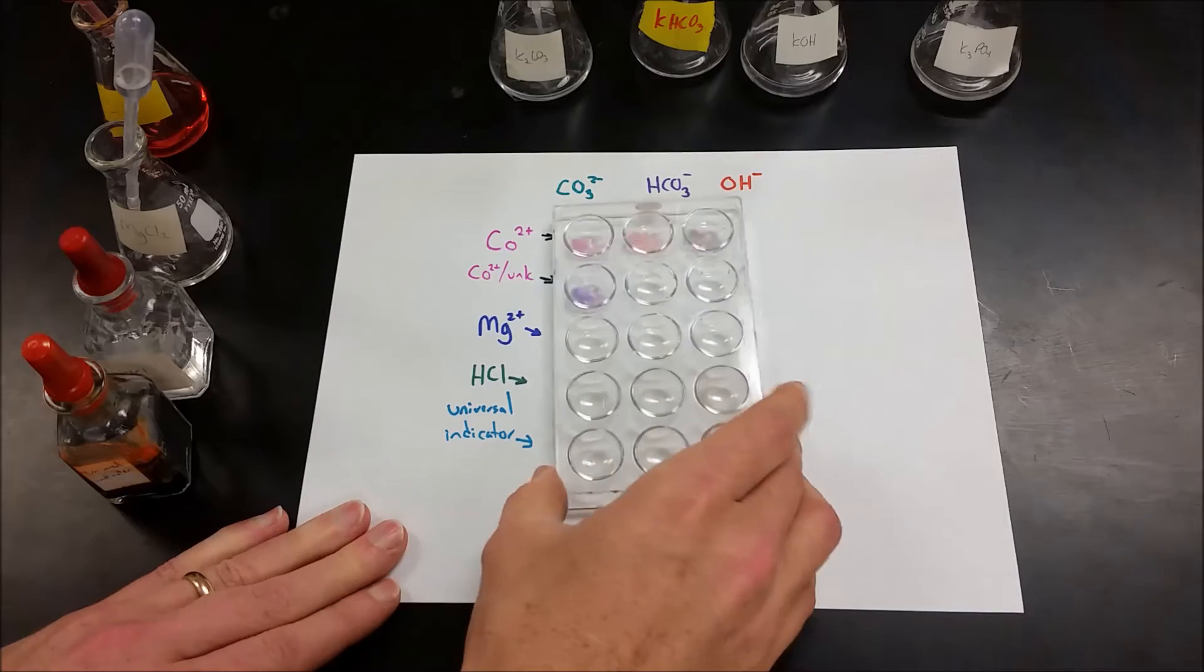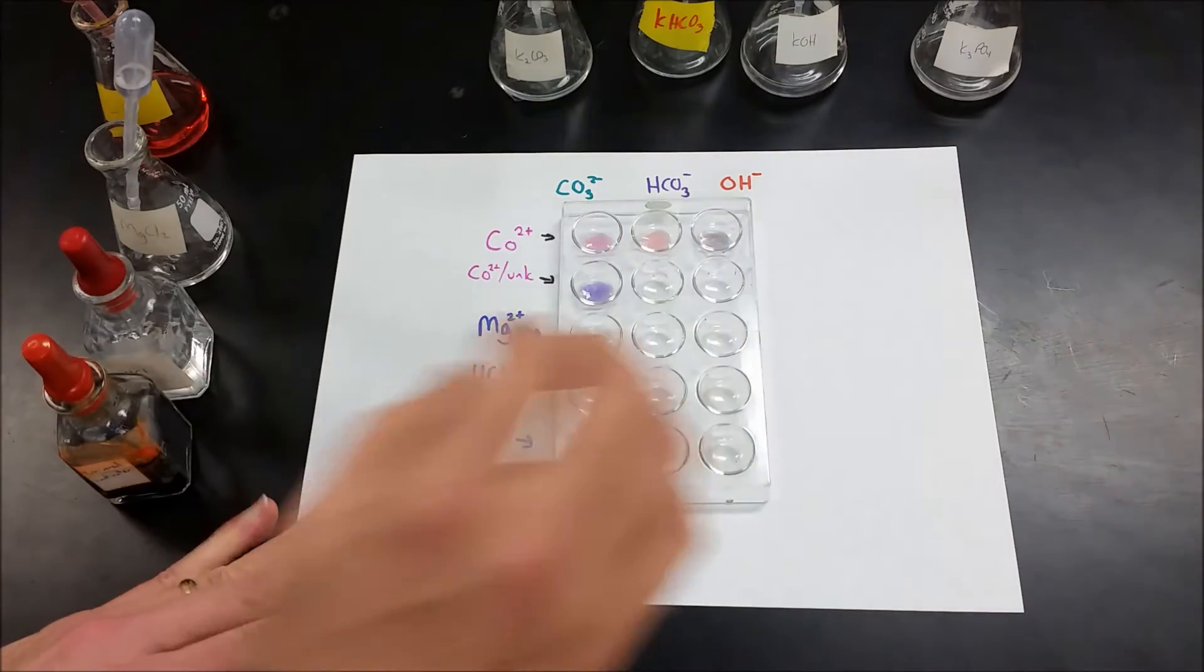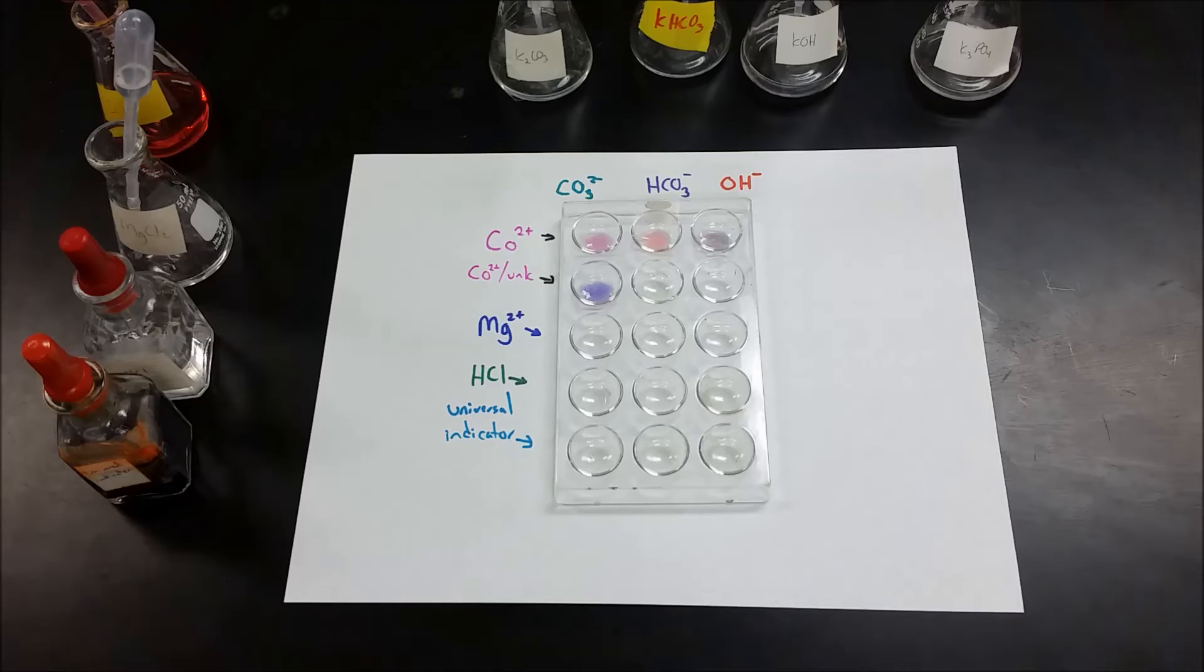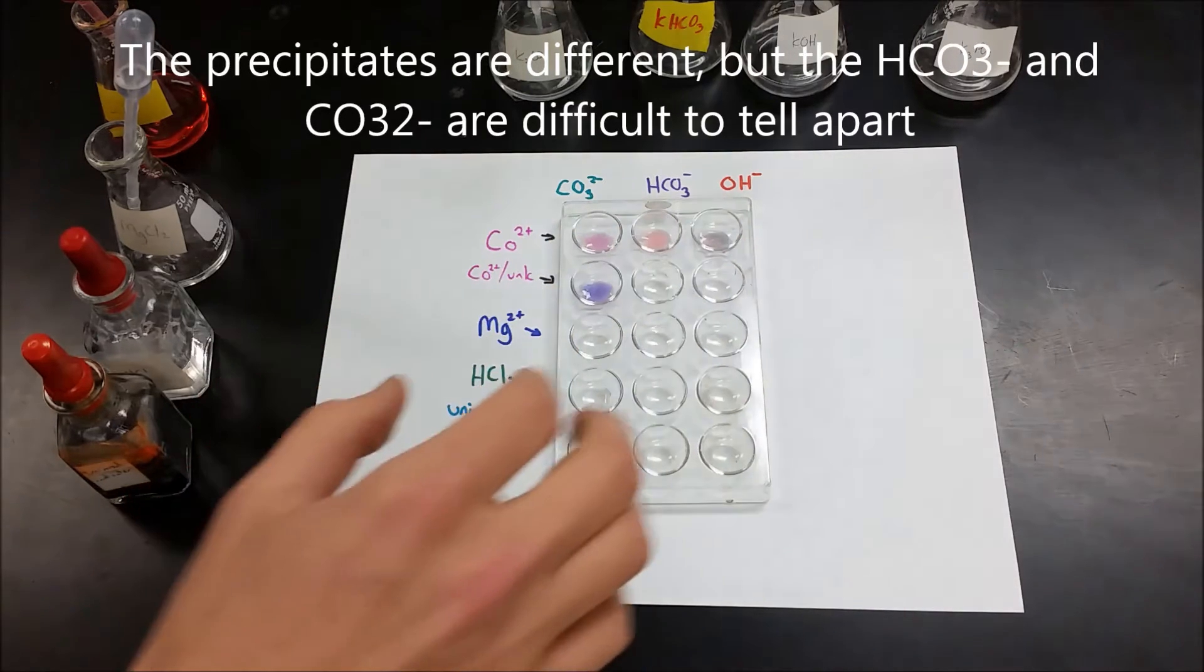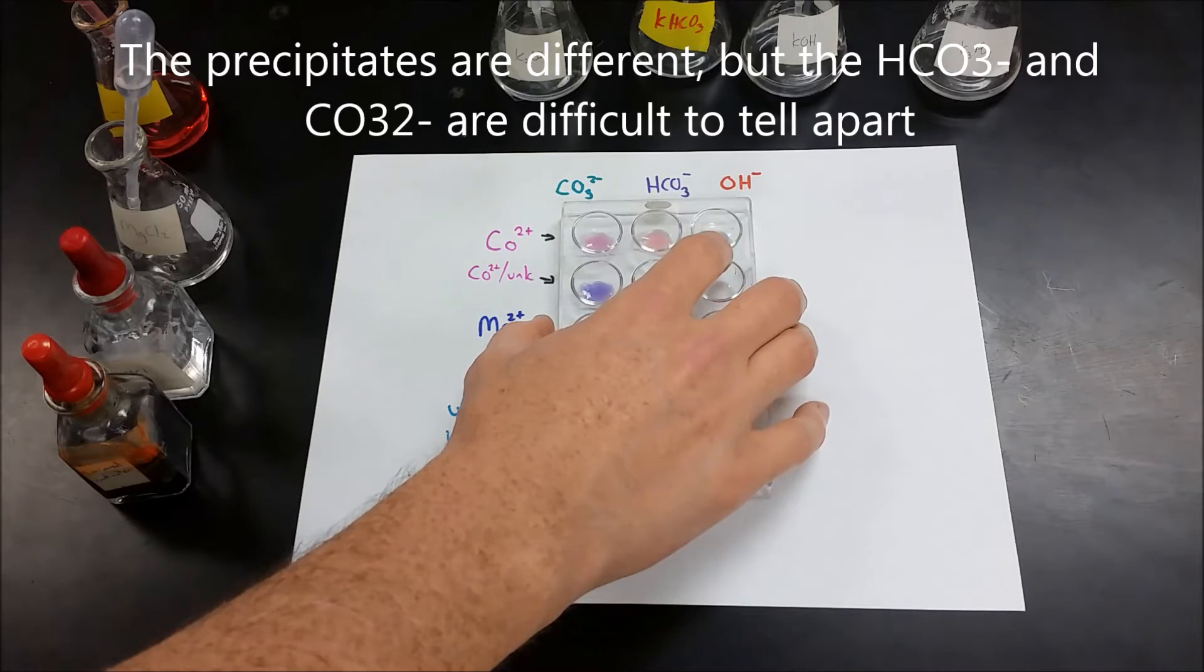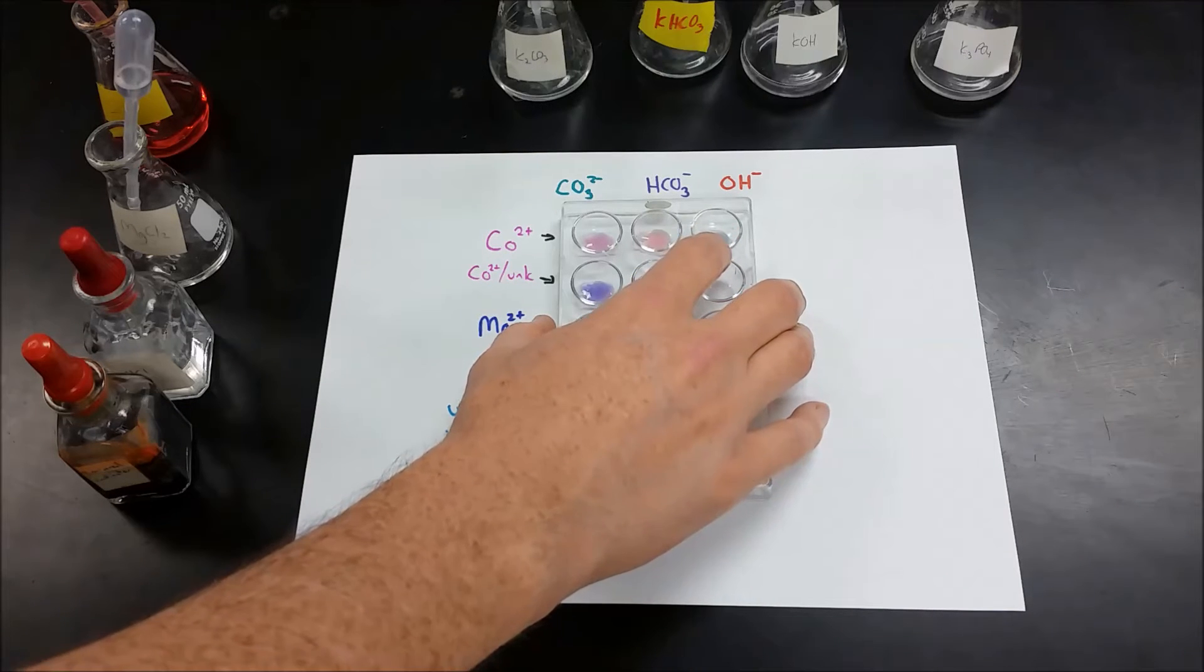Now what you'll find is that the carbonate and the bicarbonate have very similar precipitates and are probably so close that it's not going to be something you can tell apart. You might be able to tell because they are subtly different. But the key here is you eliminate whether it's a hydroxide or something totally different.